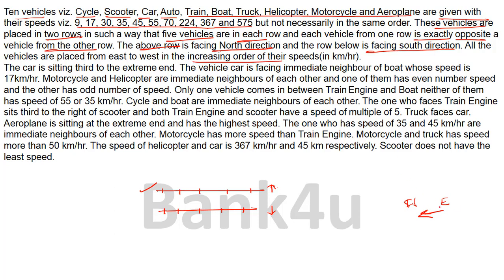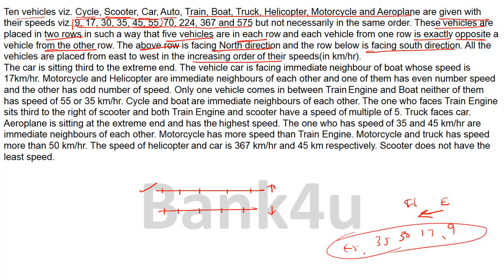Increasing order means, for example, taking only the first five related to a row: we take 9 in the first place, then 17, then 30, then 35, and 45. The vehicles must be arranged this way — that is the important condition the question gives. Based on this, we find which speed belongs to each vehicle.